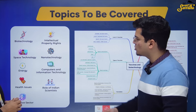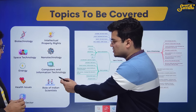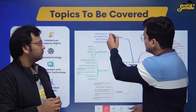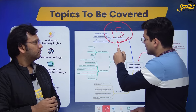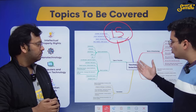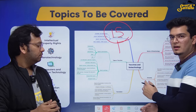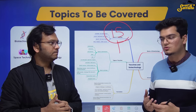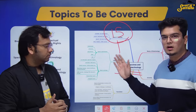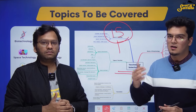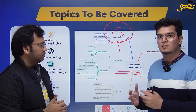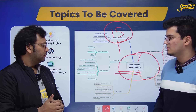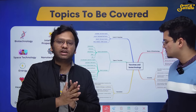We are going to cover all these topics: biotech, space tech, nanotech, energy, computers, health issues, the role of Indian scientists, and the defense sector. This will be done in 15 sessions. After every session, you will receive one-page notes — about 25 to 30 pages in total. Before the prelims, in the last week, you can revise the entire science and tech from these notes in maybe 4 to 5 hours. For example, one pager covers vaccines and biotech. In every topic, there will be these mind-map one-pager notes, allowing you to revise all of science and tech in 4 to 5 hours.